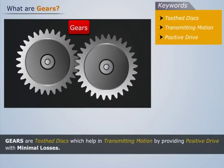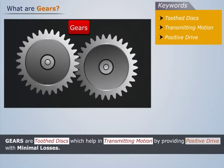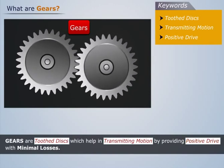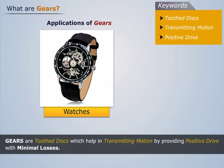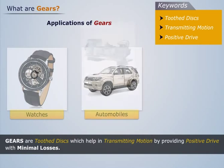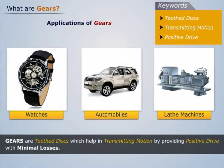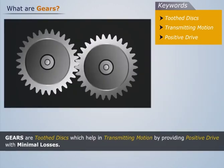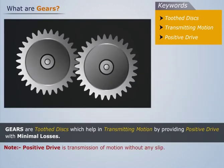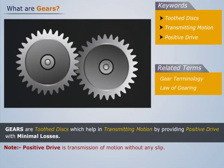Thus, gears are tooth discs which help in transmitting motion by providing positive drive with minimal losses. They are used in watches, automobiles, lathe machines, etc. Note that positive drive is the transmission of motion without any slip.